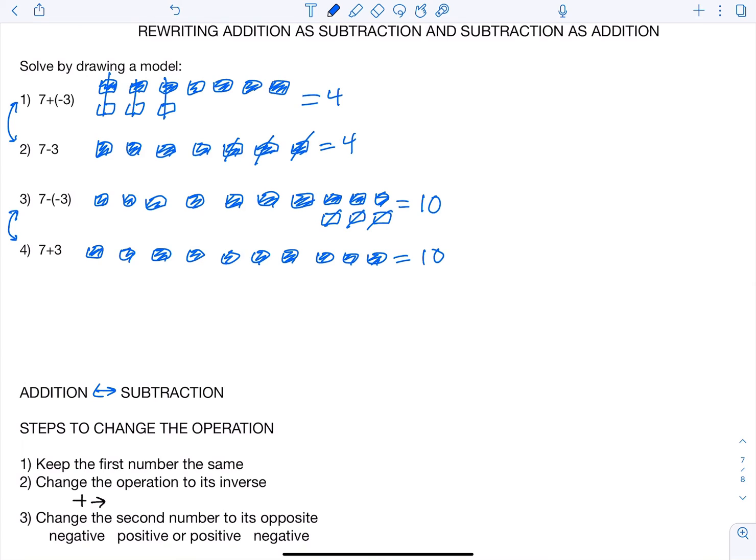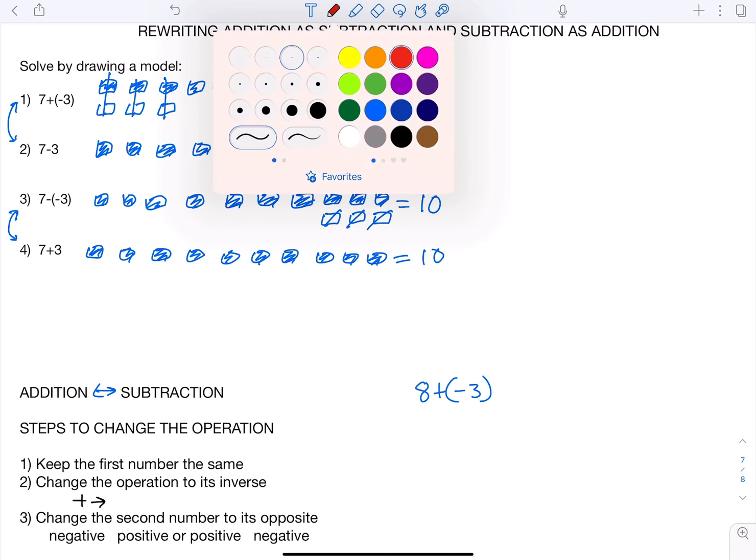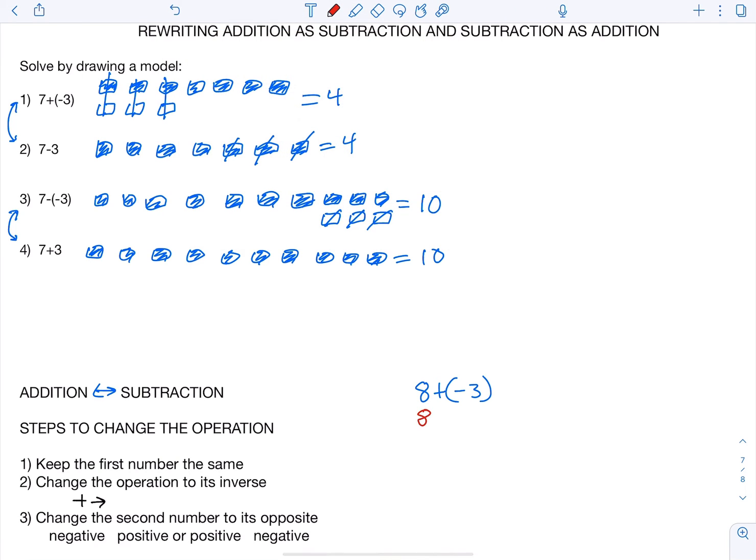Let's say I had 8 plus negative 3. So if I'm following these steps right here, I'm going to keep the first number the same. So if I'm rewriting it, it says 8 stays the same.